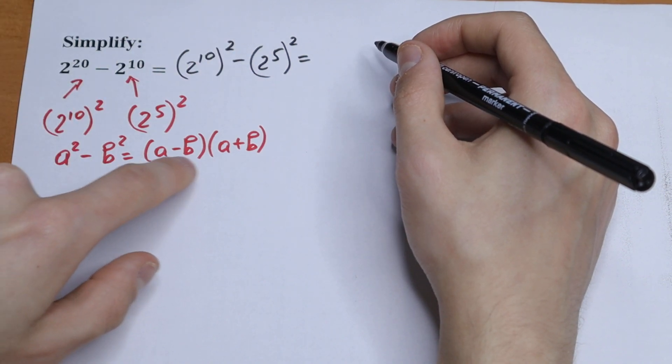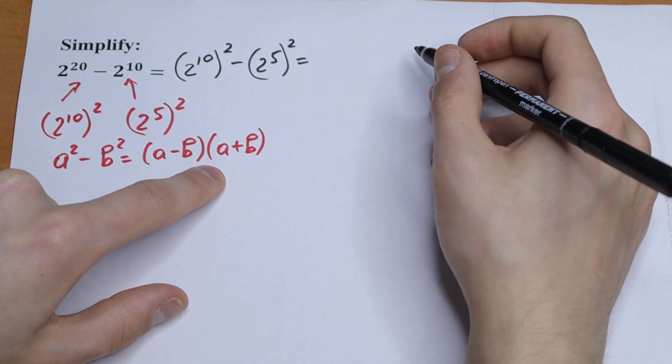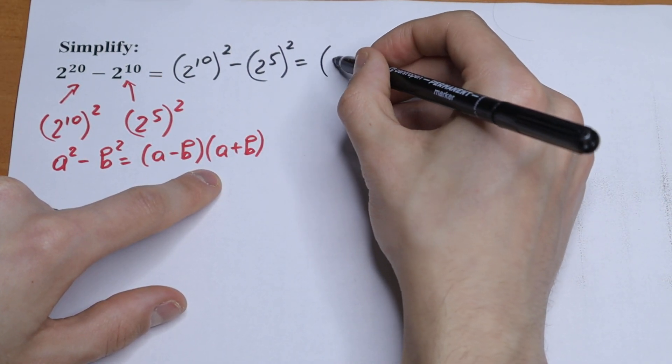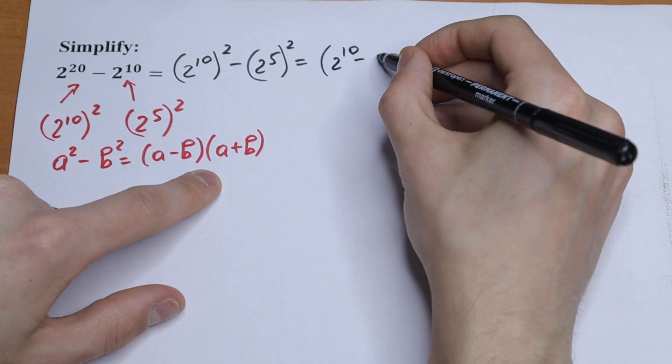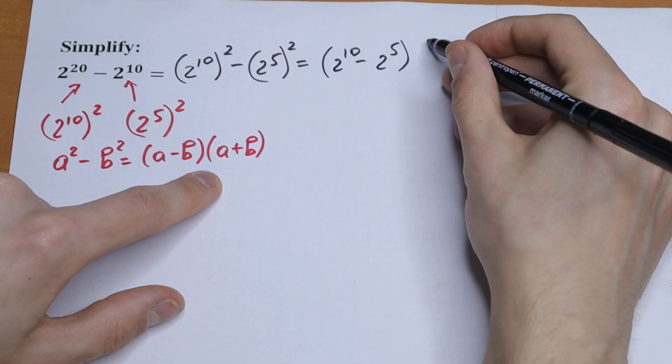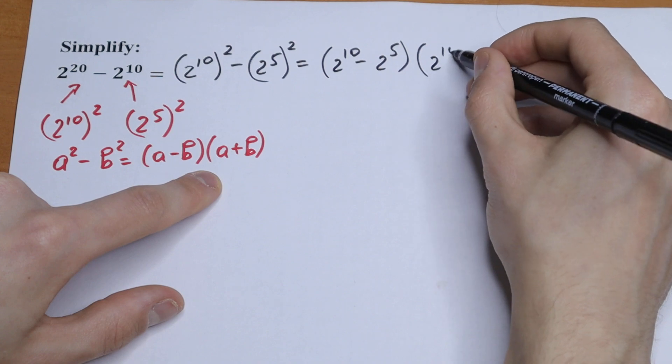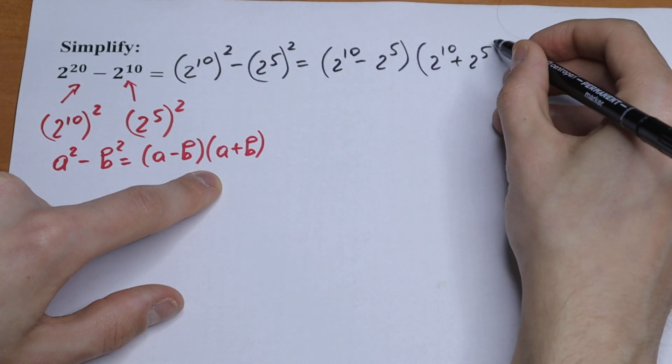We will have the difference of squares: (a minus b) times (a plus b). So as a result, we will have (2 to the 10th power minus 2 to the 5th power) times (2 to the 10th power plus 2 to the 5th power).